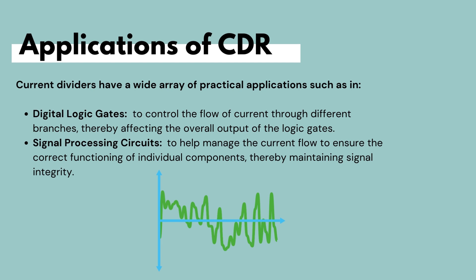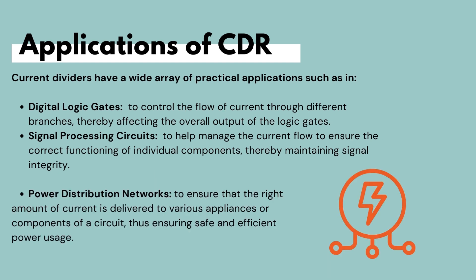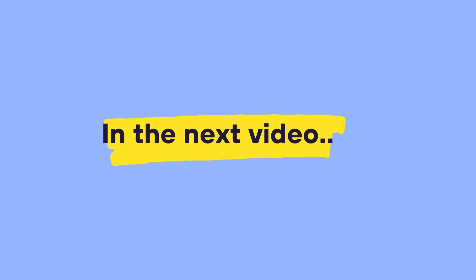Current dividers are also very important in power distribution networks, where they are crucial for ensuring that the right amount of current is delivered to various appliances or components in a circuit, ensuring safe and efficient power usage. Thank you for watching this video — stay tuned for the next one where we look at voltage division in series circuits and its different applications. As always, thank you for watching.